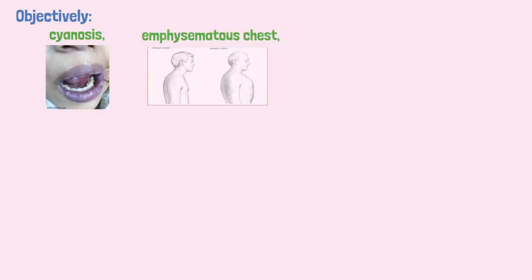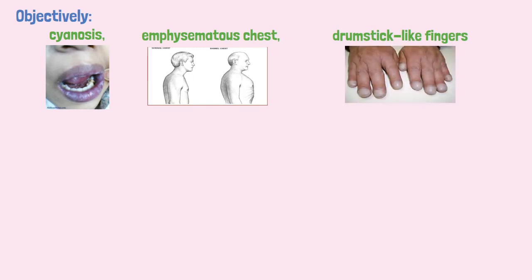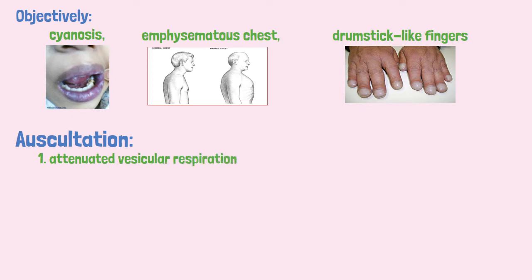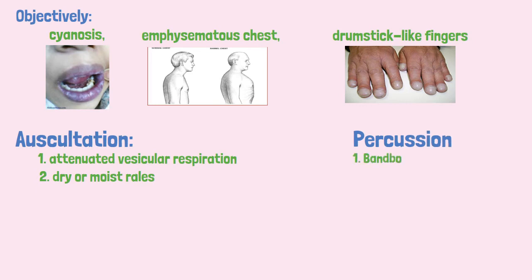Objectively, the following signs are noticed: cyanosis of the lips, emphysematous chest which is the expanded chest, and drumstick-like fingers. On auscultation, attenuation of the vesicular respiration is heard with dry or moist rales. And on percussion, bandbox sound is heard with tympanic sound over the area of bronchiectasis.